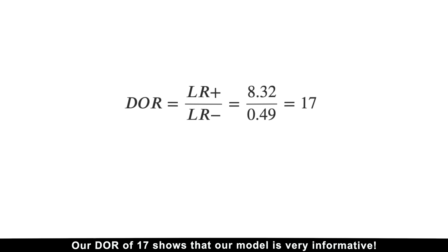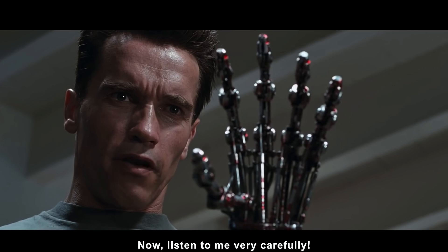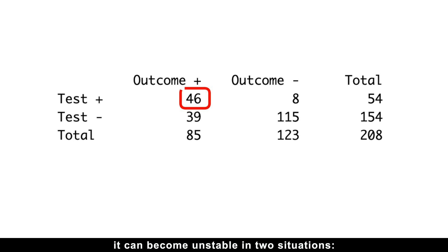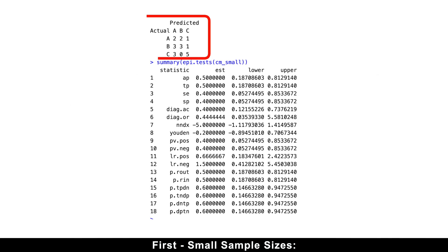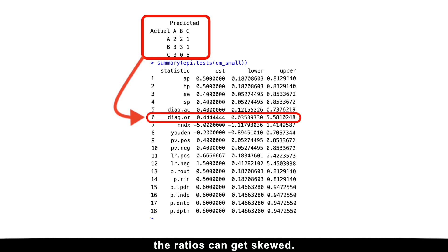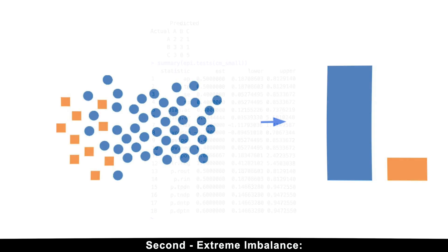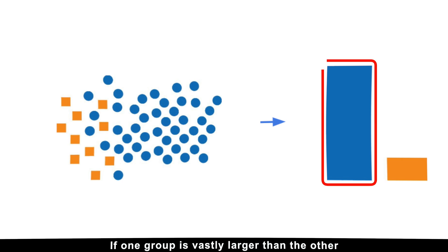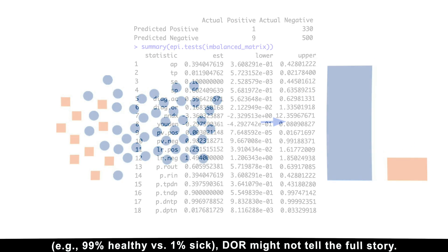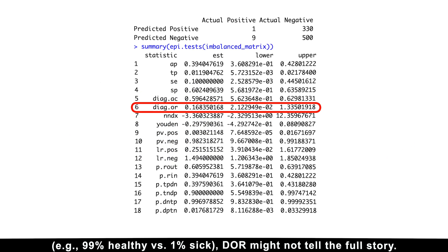A diagnostic odds ratio of 17 shows that a model is very informative. However, while it is robust to slight imbalances in your data, it can become unstable in two situations: first, with small sample sizes, where too few true positives or true negatives can skew the ratios; and second, with extreme imbalance — for example, 99% healthy versus 1% sick — where the diagnostic odds ratio might not tell the full story.